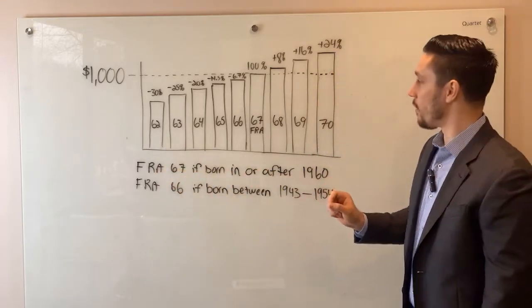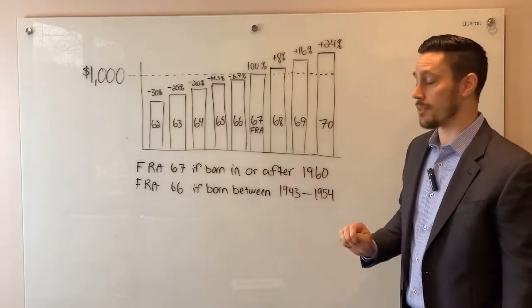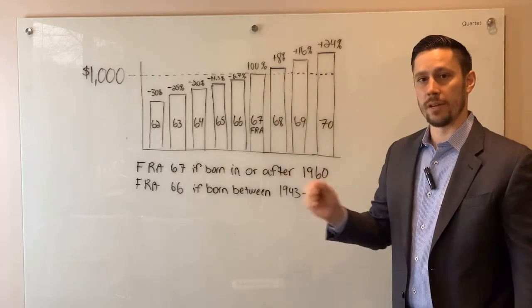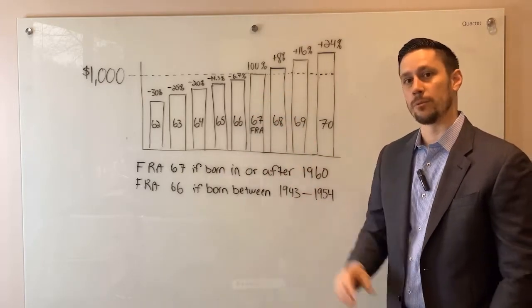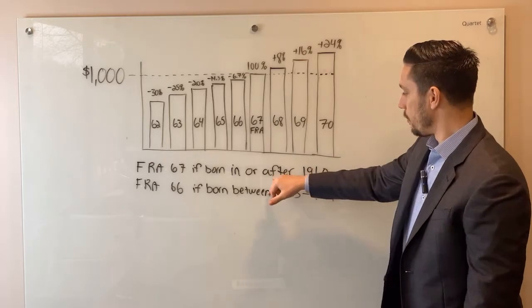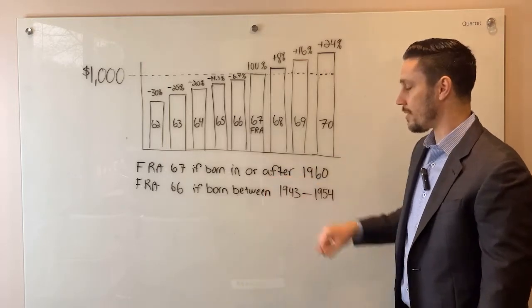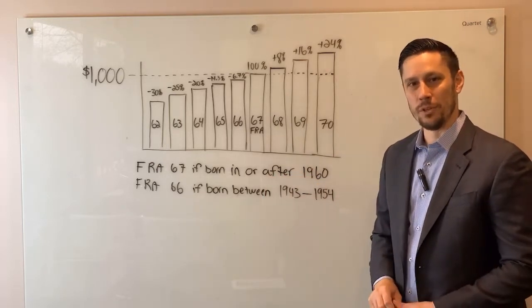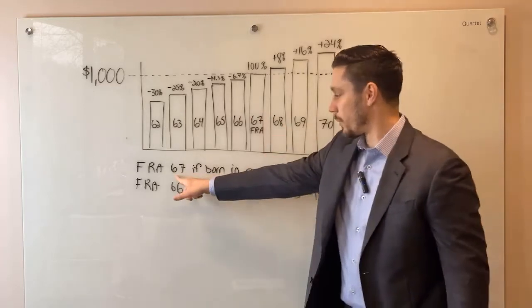And that's going to be the age at which, and in this example I'm using 67, you will get 100% of the benefit listed on your statement at full retirement age. And if you were born in or after 1960, that full retirement age will be 67.